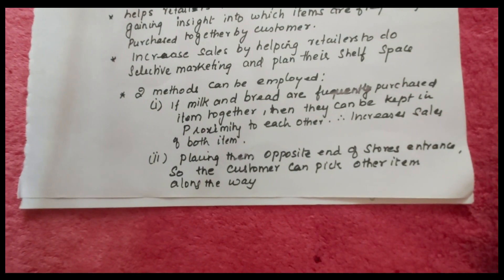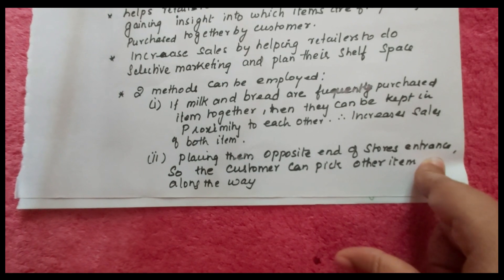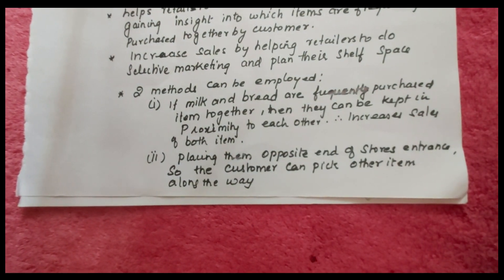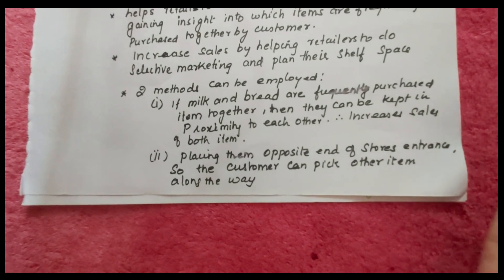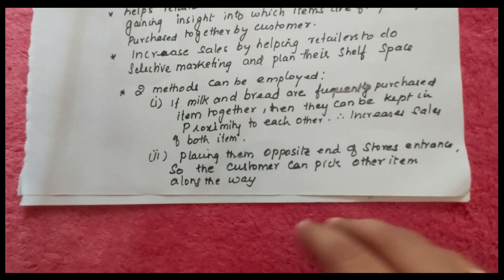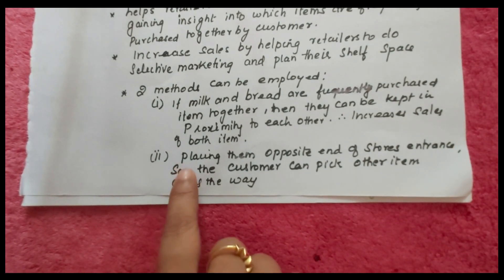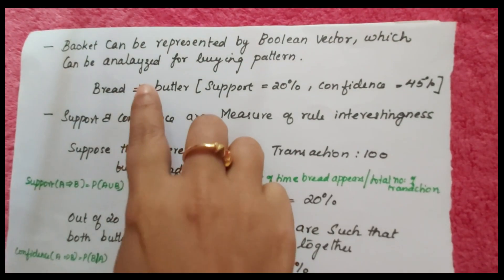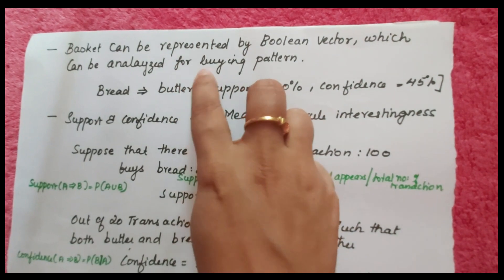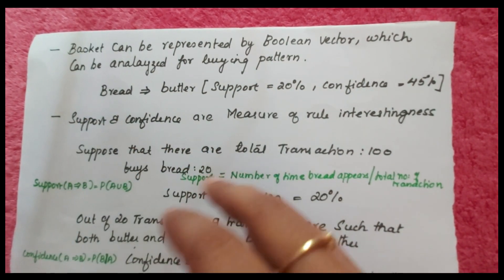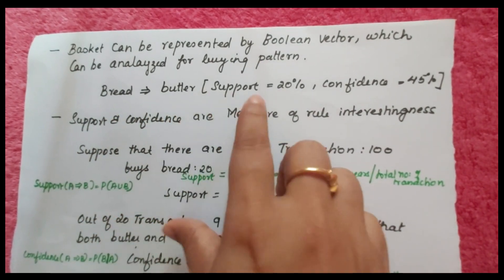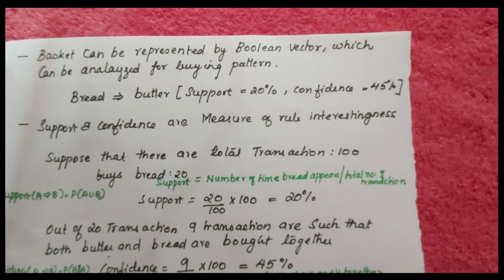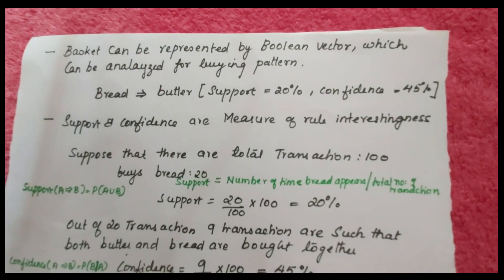Another method is placing frequently bought items at opposite ends of the store entrance, so when a customer goes to get milk and then walks to the other end for bread, they may pick up other items along the way, also increasing sales. The shopping basket can be represented by a boolean vector and analyzed for buying patterns. For example, bread and butter taken together might have support equal to 20% and confidence equal to 45%. The measure of interestingness is represented by support and confidence.